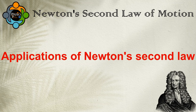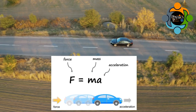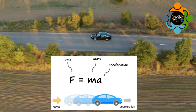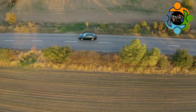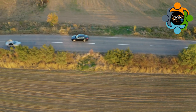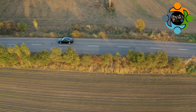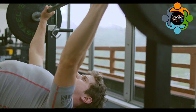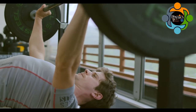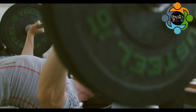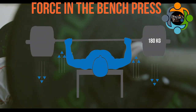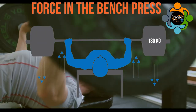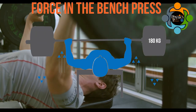The Second Law of Motion can be applied to real-life scenarios. For example, when a car accelerates, the engine produces a force that pushes the car forward. The amount of force needed depends on the mass of the car and the desired acceleration. Similarly, when a weightlifter lifts a heavy weight, they must apply a large force to overcome the weight's mass and produce the desired acceleration.